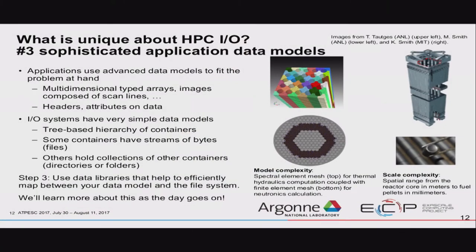The third thing: what else is interesting about HPC I/O? The applications themselves tend to have complicated data models. A lot of scientific domains use multi-dimensional arrays, complex variable types, images with different scan lines, headers and attributes that tell you what the data is and how it was generated. But the parallel file system knows nothing about any of those things — it just has files with bytes in them. The trick is mapping from these multi-dimensional arrays and complex data types into something that makes sense for the file system, and again there are tools we'll be talking about today that help with that.